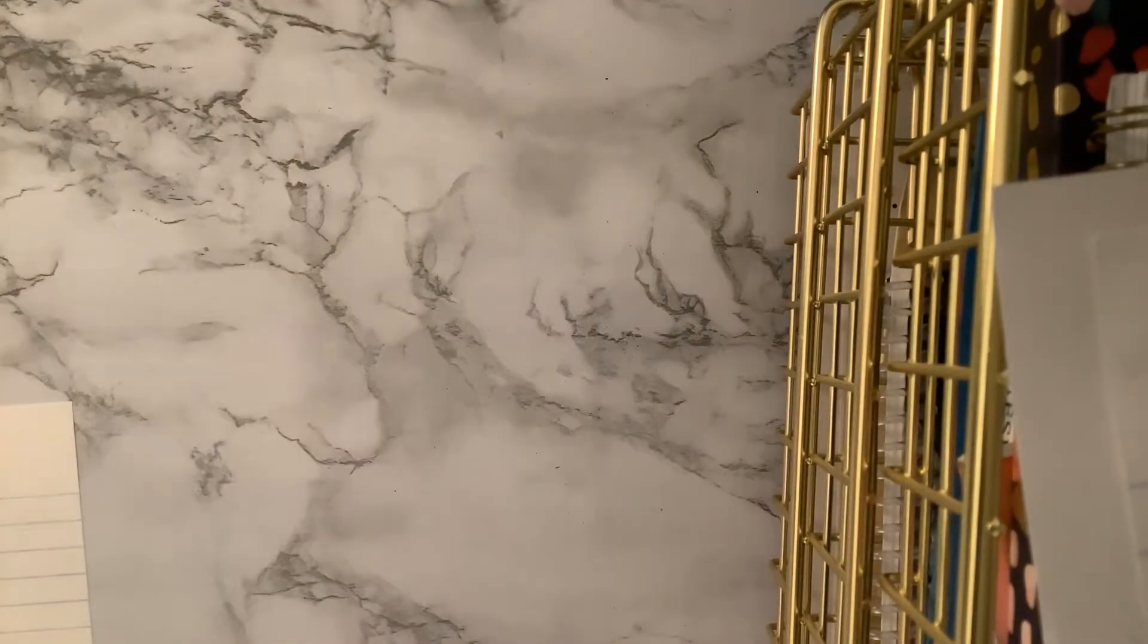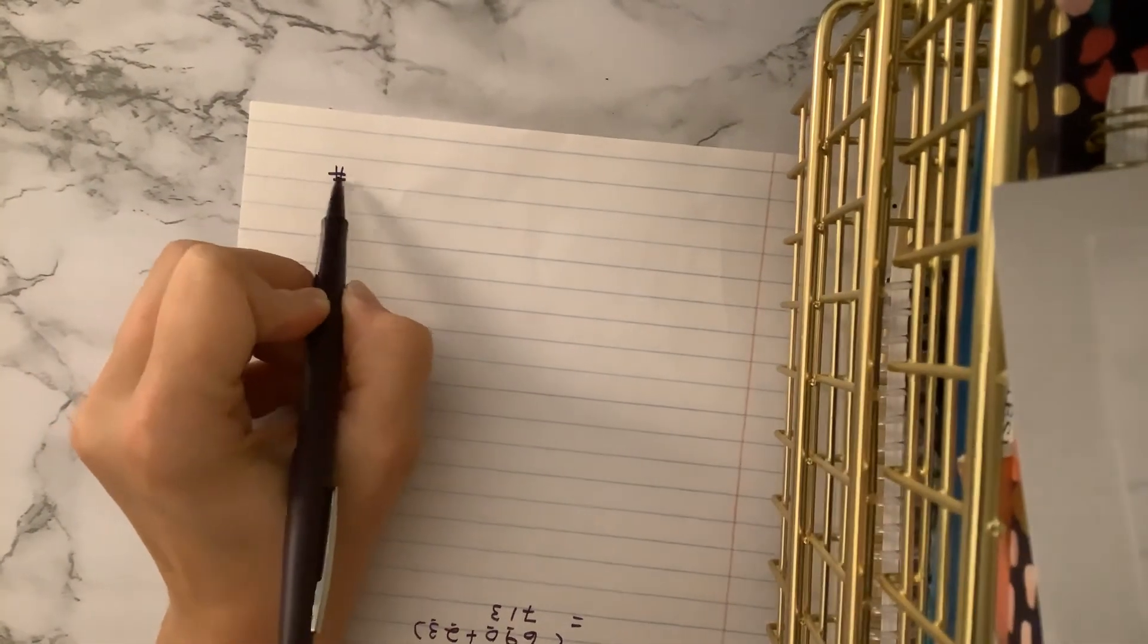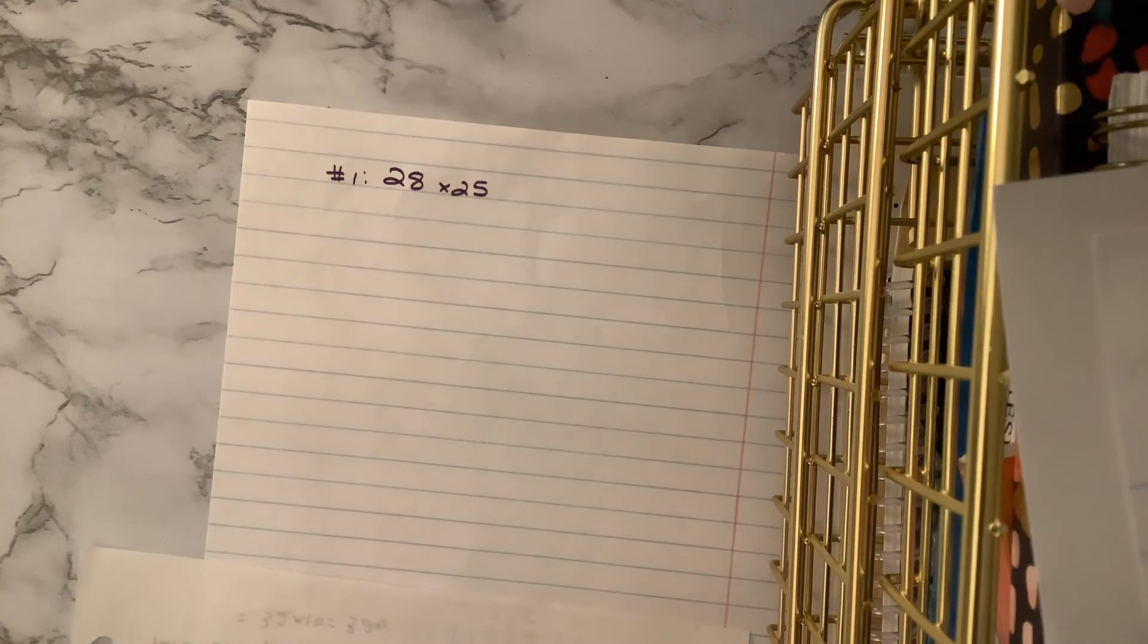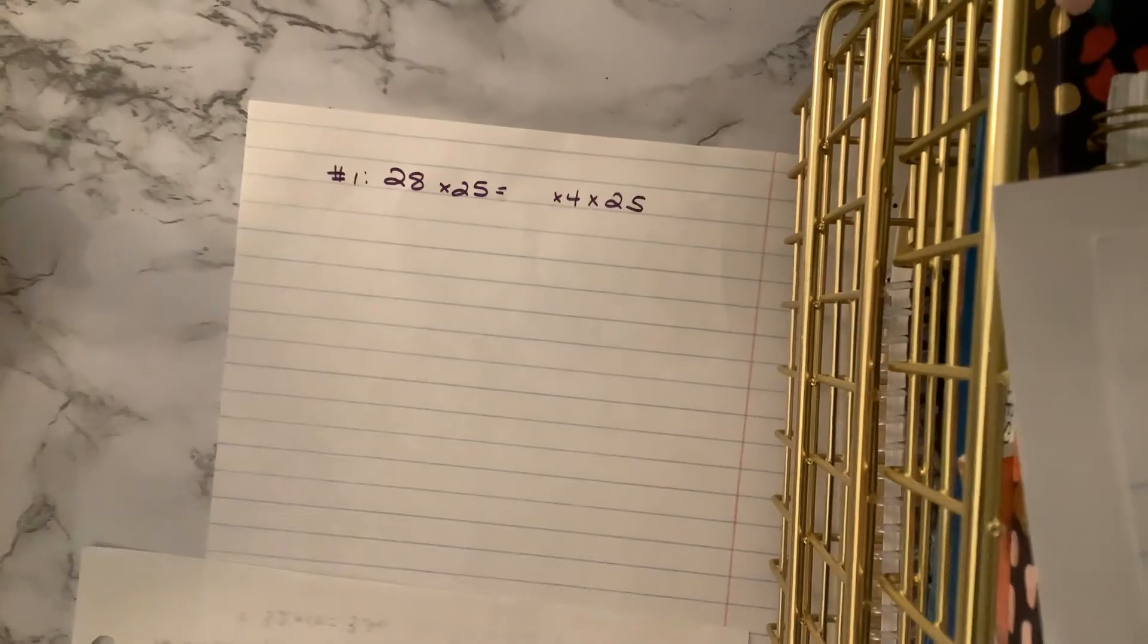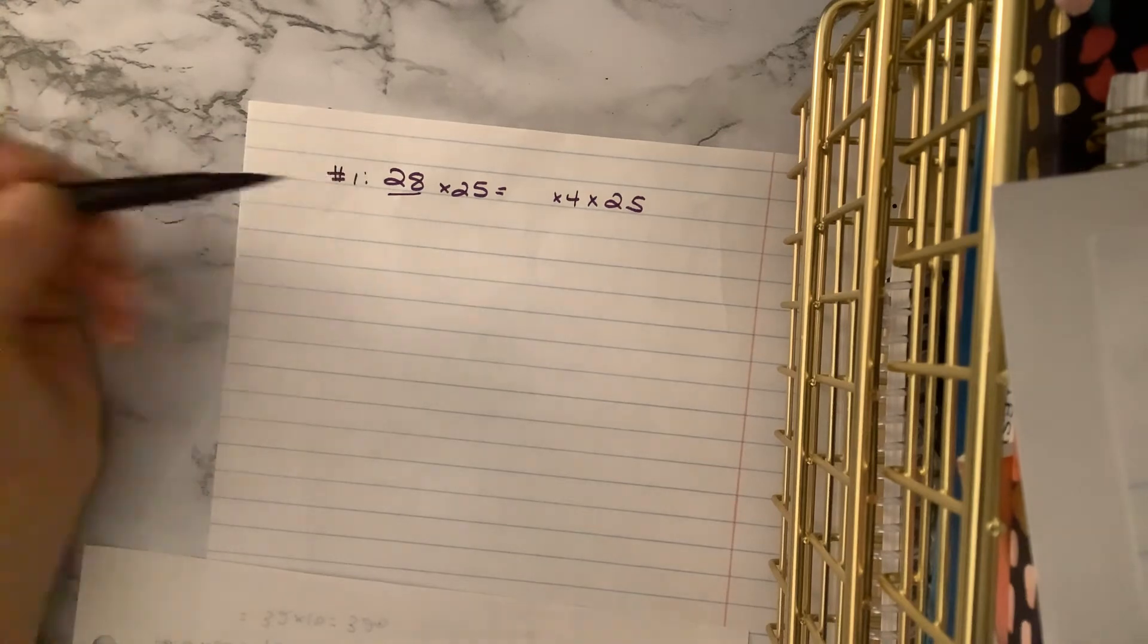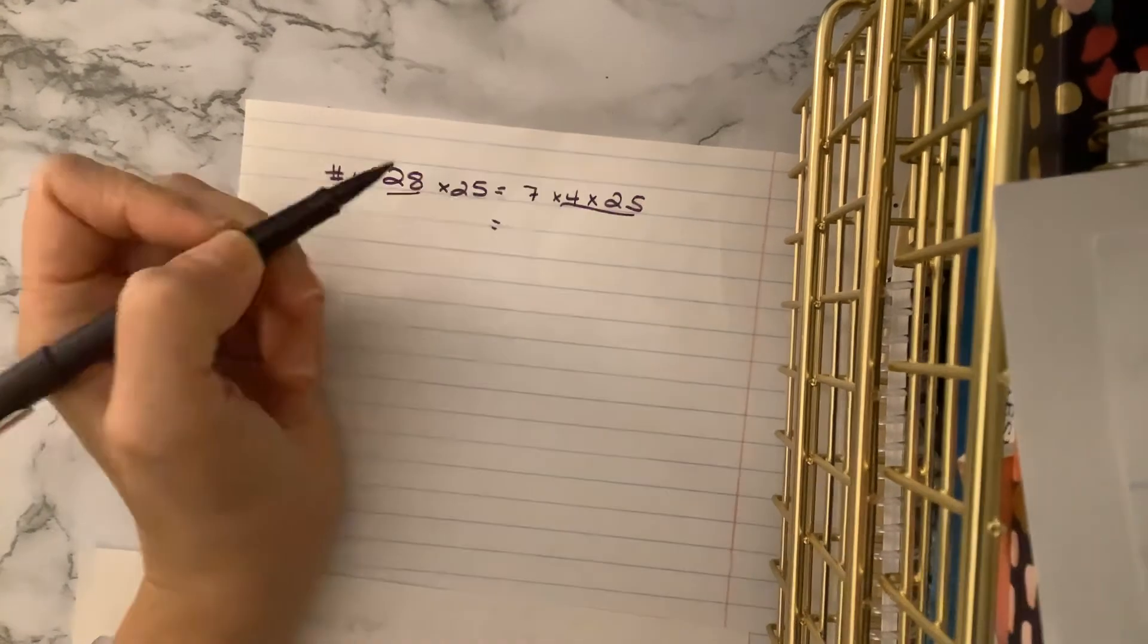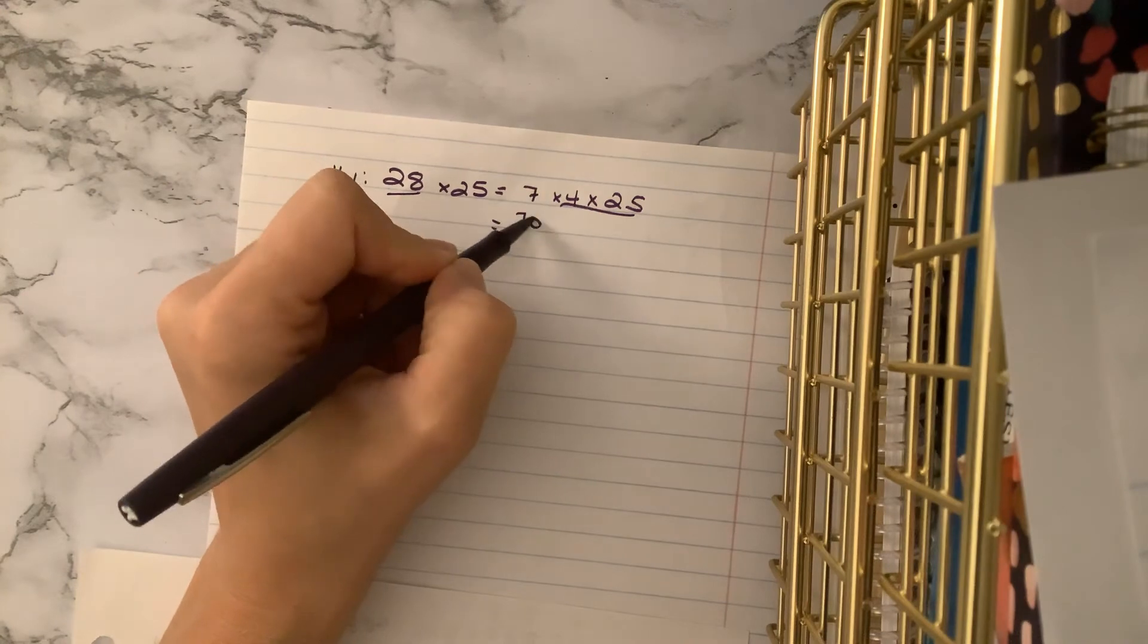So let's do a couple of examples of our find 4 times 25. So let's say for problem 1, let's do 28 times 25. If you feel ready, I would pause and give it a go, but if not, we'll try it together. So remember the goal is always to get something times 4 times 25. So we want to focus here, what times 4 will get us 28? That's right, 7. Now we know that 4 times 25 is 100. 7 times 100 is 700.